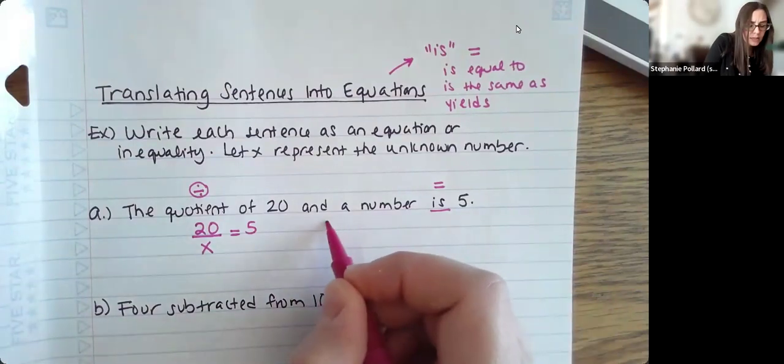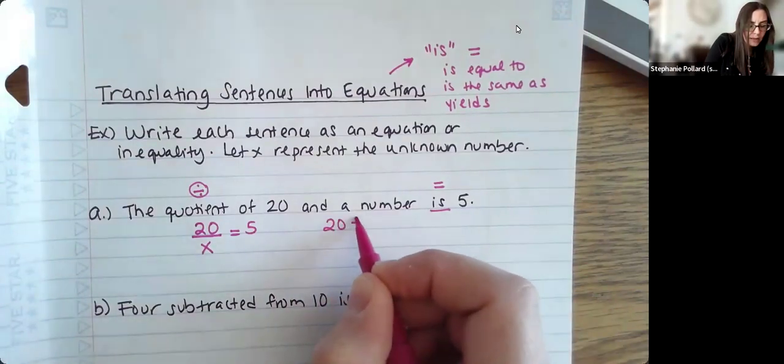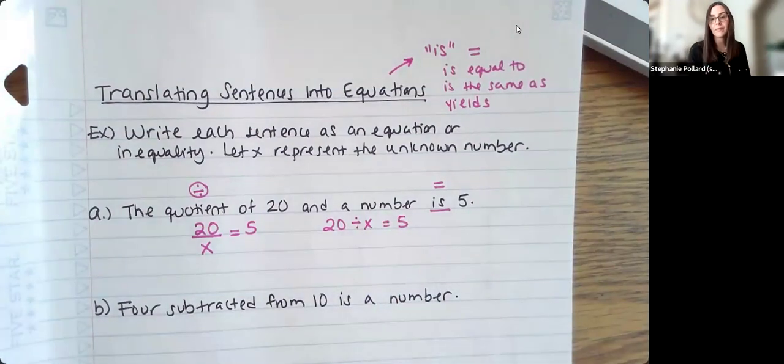I could also write it like this. 20 divided by that number is equal to 5. So those are both correct ways to write this.